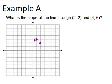This is the point (2, 2), and this is the point (4, 6). So we're looking for the slope of the line that goes through those two points.